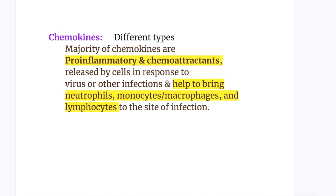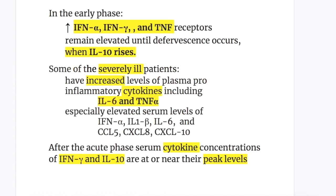Chemokines: there are many different types, and the majority of chemokines are pro-inflammatory and chemo attractants. They are released by cells in response to virus or other infections and help to bring neutrophils, monocytes, macrophages, and lymphocytes to the site of infection. In the early phase of the cytokine storm, there is increased interferon alpha, interferon gamma, and TNF receptors that remain elevated until defervescence occurs when interleukin 10 rises.